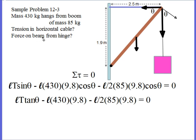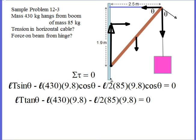For the force of the beam on the hinge: there will be a horizontal component equal to the tension, and a vertical component equal to the sum of the weights, since there is translational equilibrium. Adding these two components using the Pythagorean theorem gives the magnitude of the hinge force. You also need the angle at which it acts, since this is a vector and direction matters.